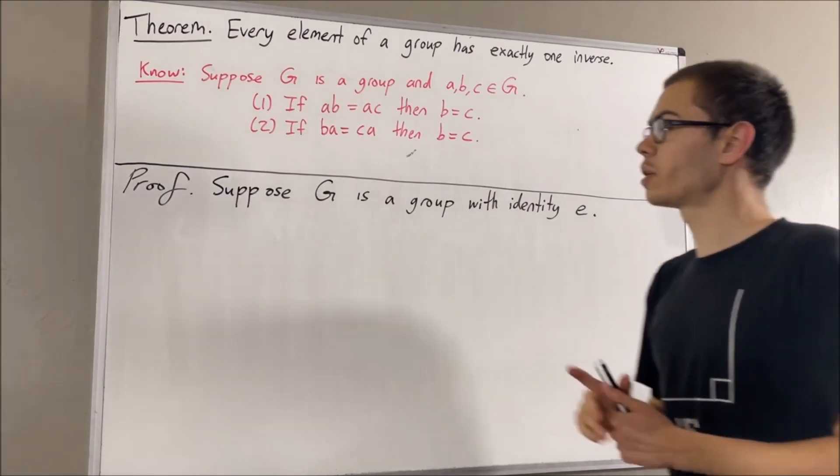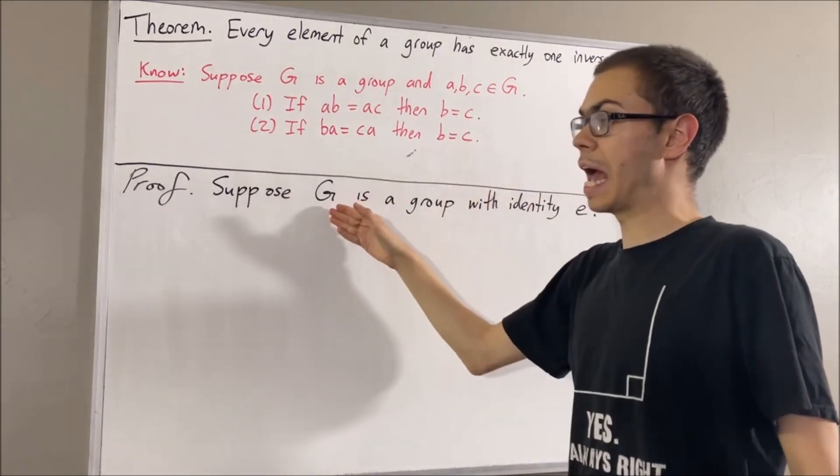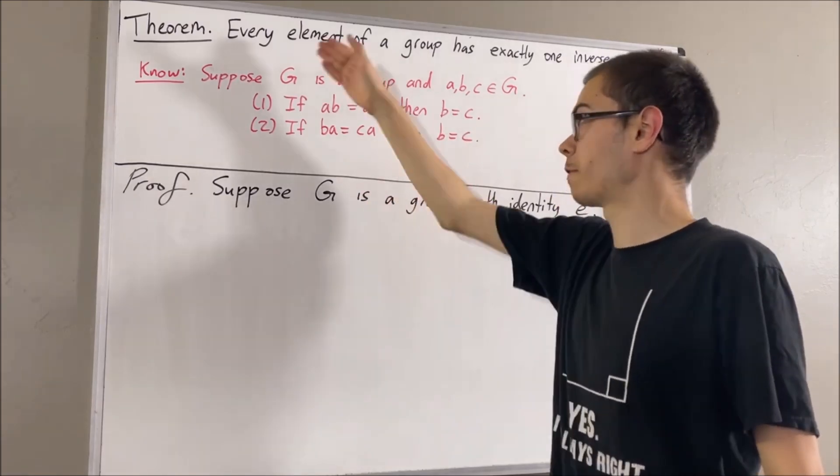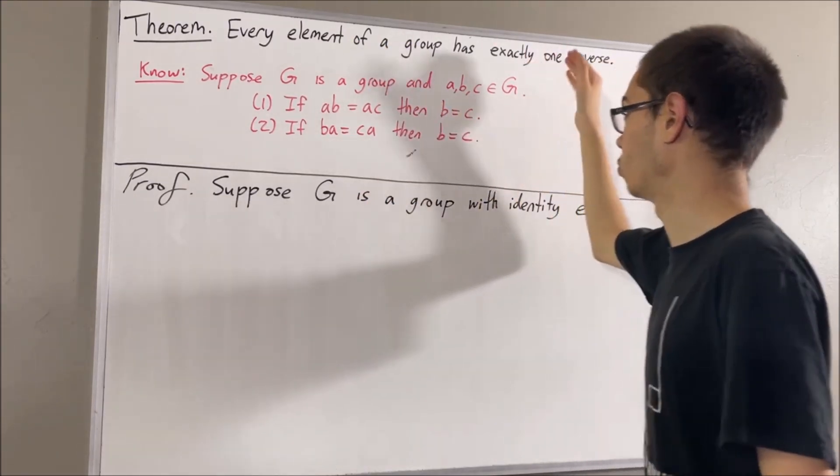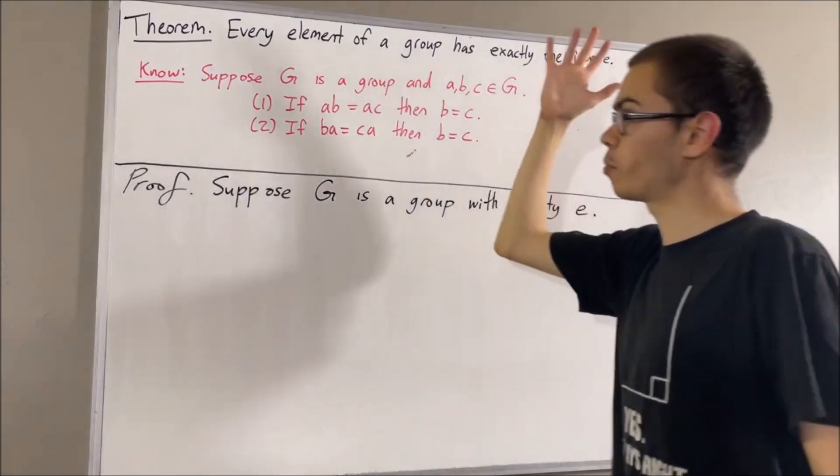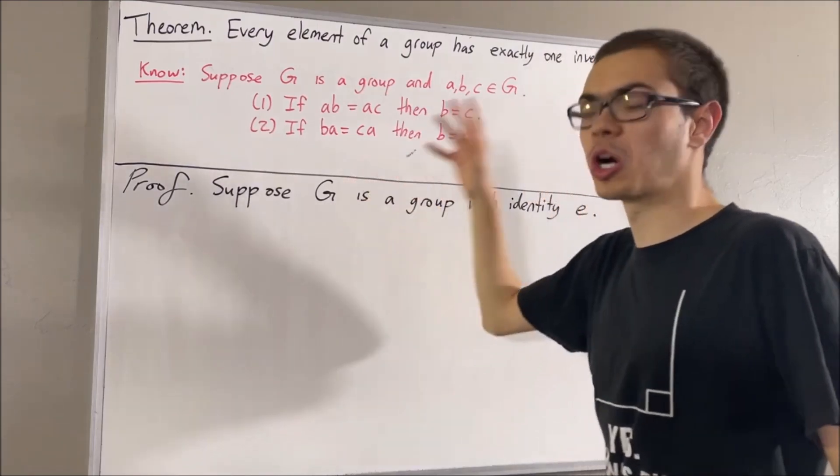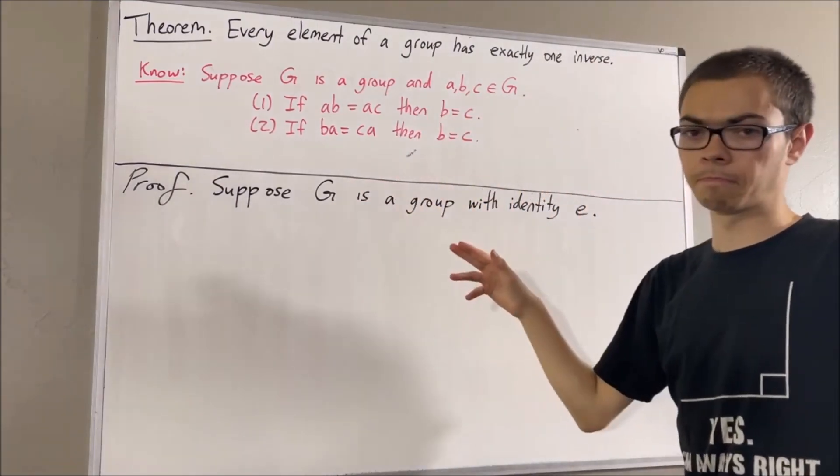Well, we know that every element of G has an inverse—that comes from the definition of a group. But we want to prove that every element of G has exactly one inverse. Since we're trying to prove a statement about every element of G, let's consider an arbitrary element of G. I'll call it a.